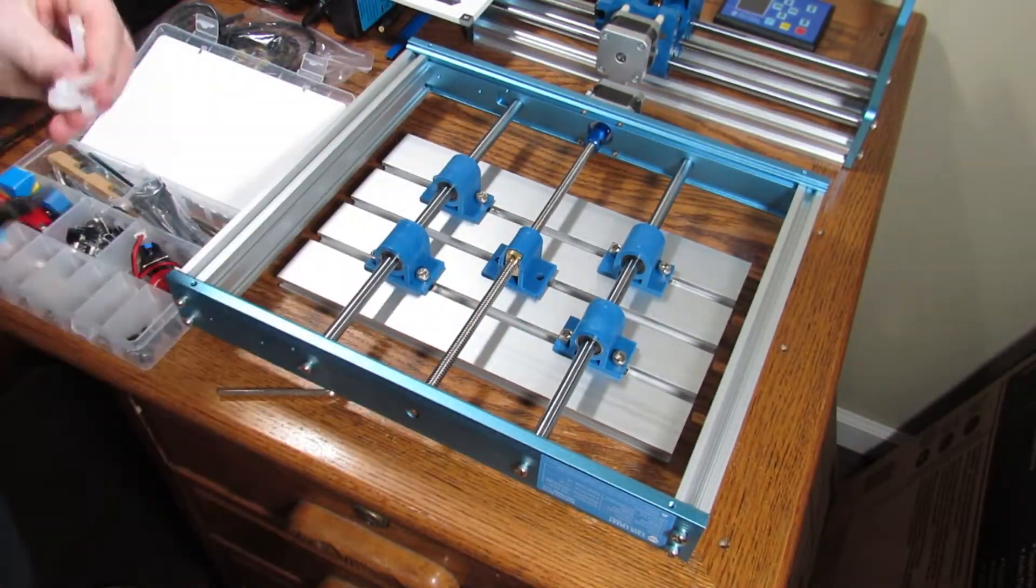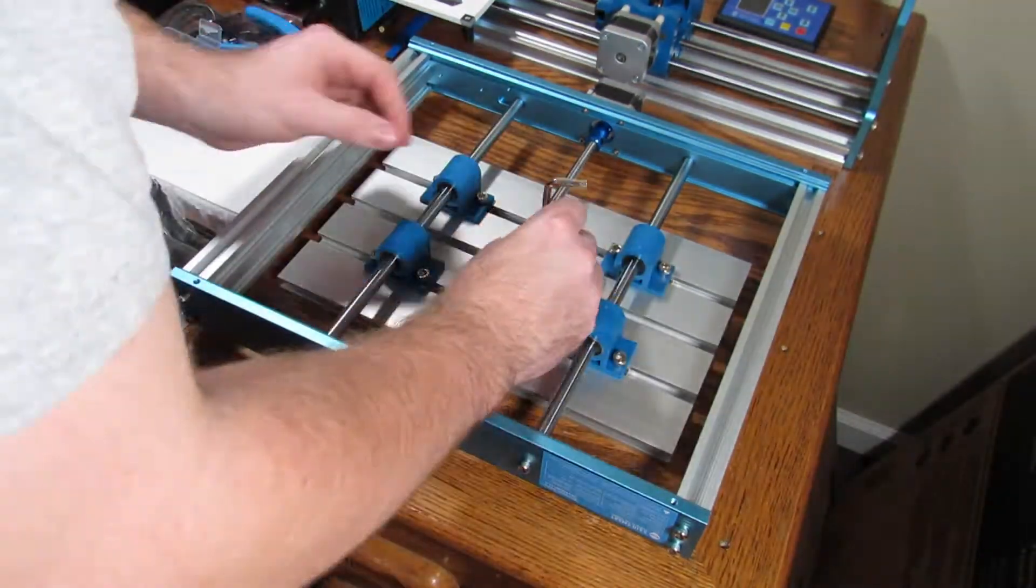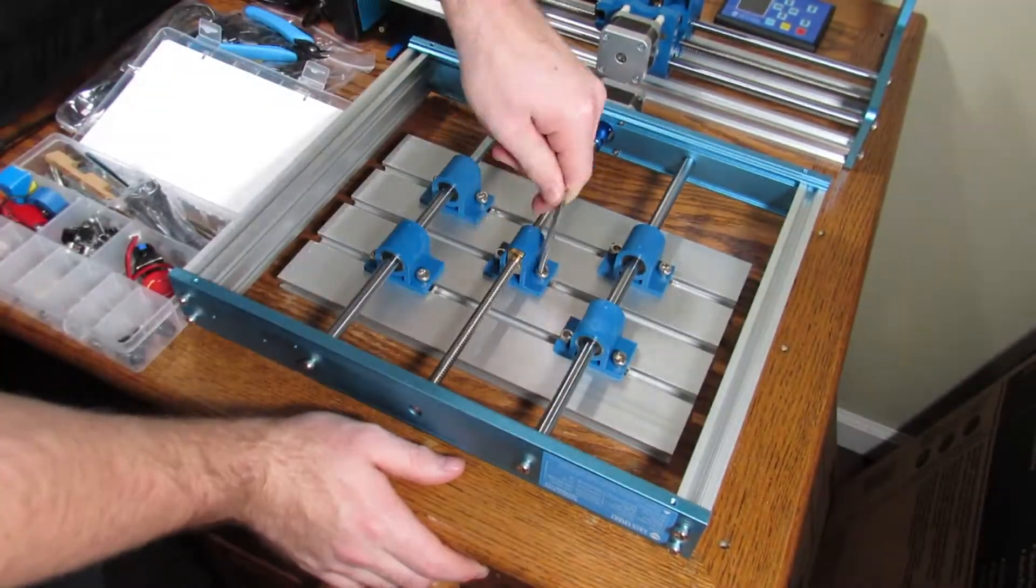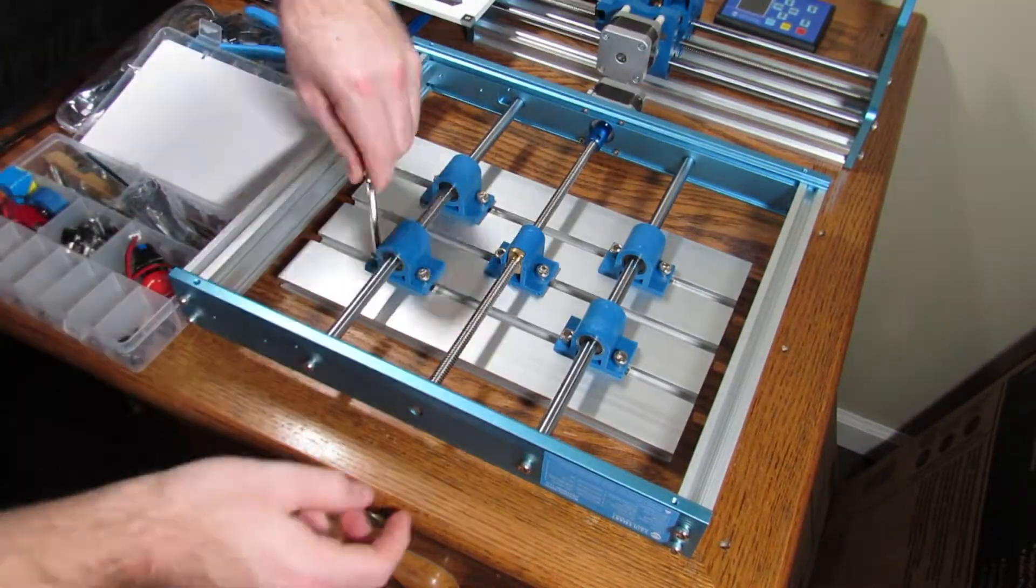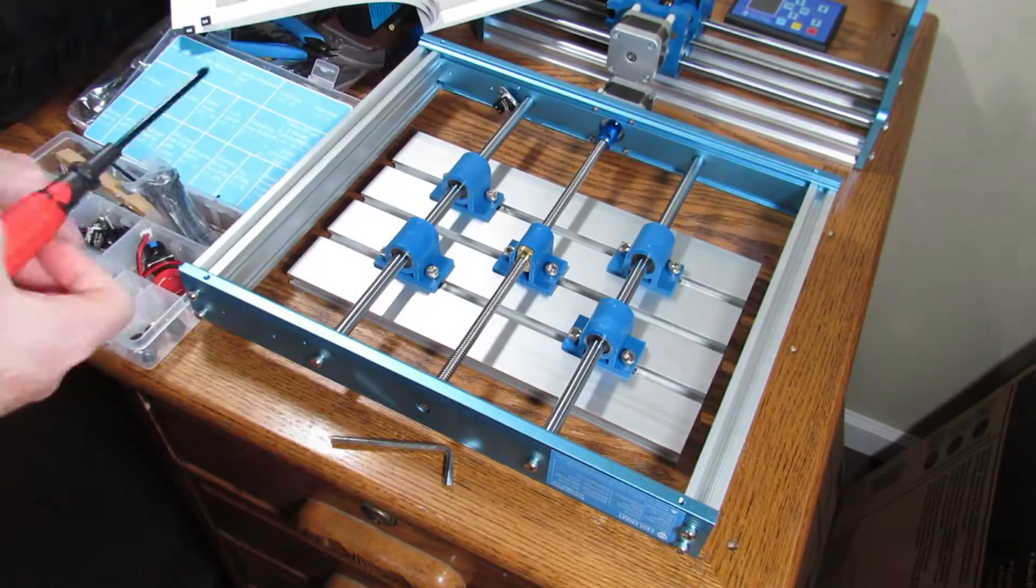First thing I do is cut the zip tie. That's to hold everything in place during shipping. Then you want to go ahead and install the two bolts there in the middle bearing and then just make sure everything is tight. You never know what happens during shipping. Stuff gets jogged around, moved around.